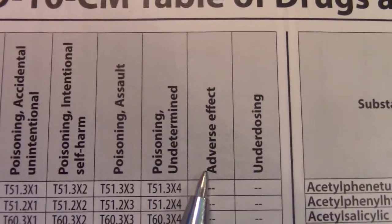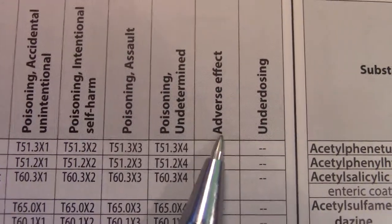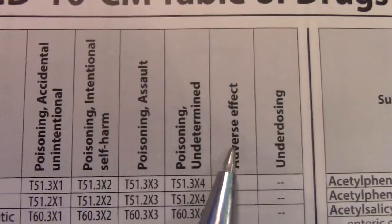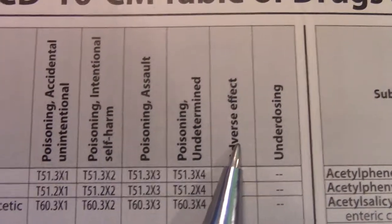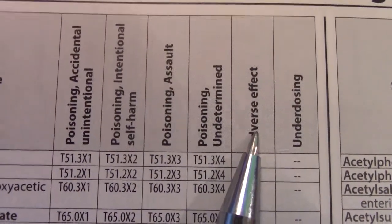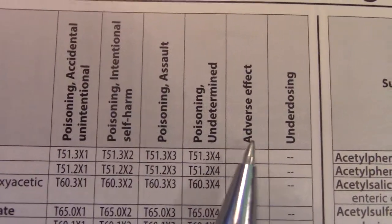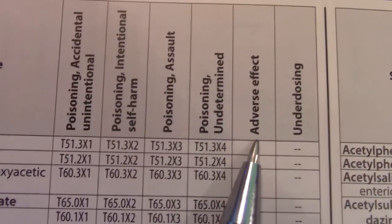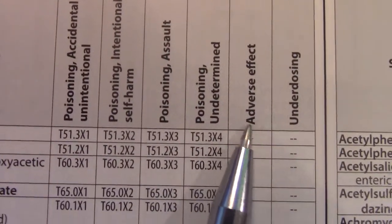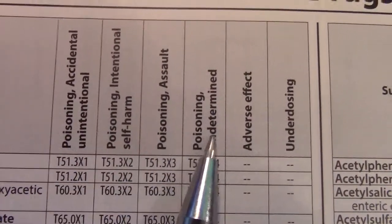An adverse effect is not an actual poisoning. It's when your physician prescribes a medication and you have some type of adverse effect to it. For example, I had pink eye conjunctivitis and I didn't know I was allergic to gentamycin, which is what the physician prescribed. An adverse effect is a medication you take as prescribed, but your body has a reaction. I had an allergic reaction — so it becomes an adverse effect, not a poisoning.